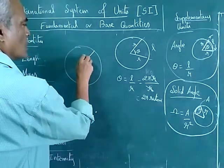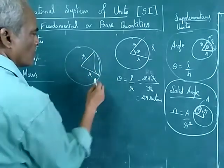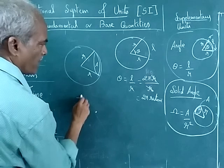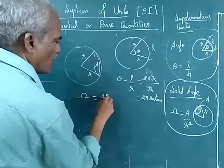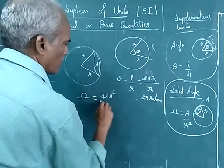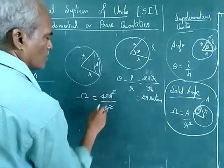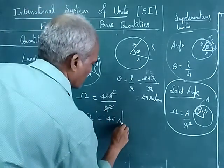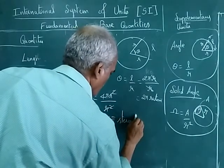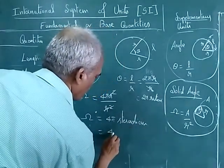So omega is equal to the full area of the sphere is 4 pi R square divided by R square. So that is omega will be 4 pi steradian.